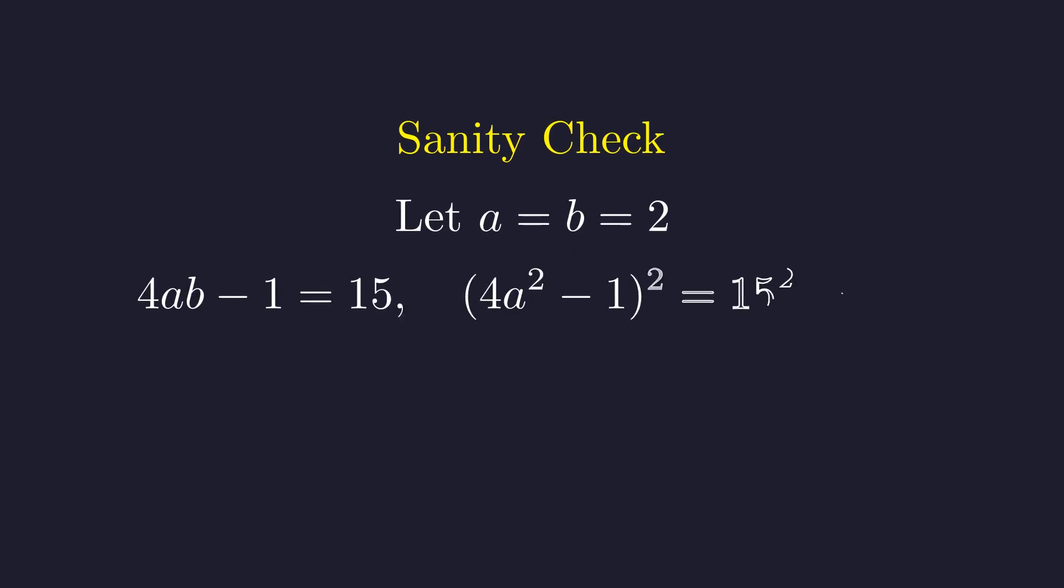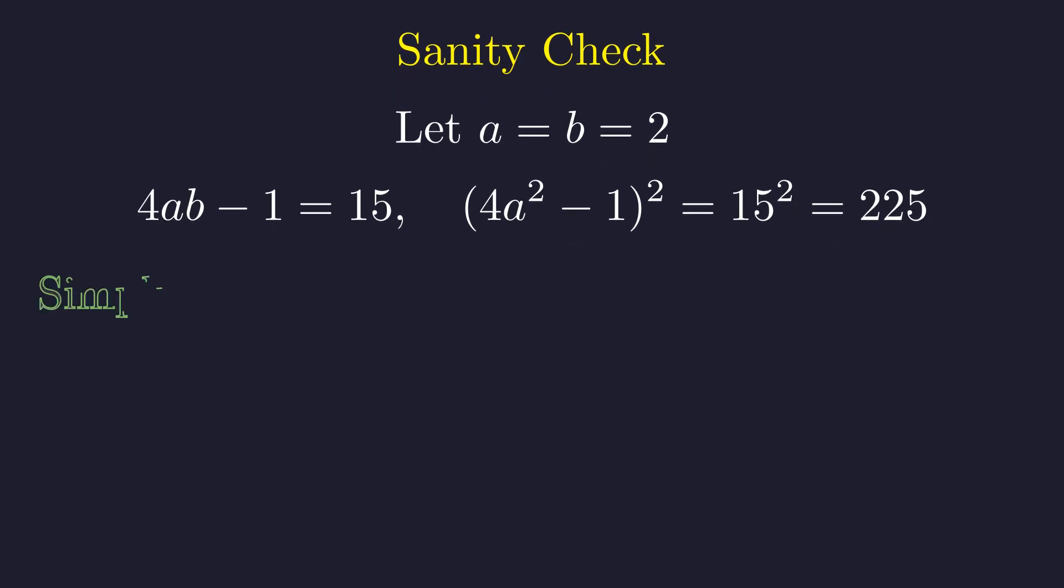Before proceeding with the formal proof, it is instructive to verify our transformation with a concrete example. Let us consider the case where A equals B equals 2. Our original condition becomes: does 4 times 2 times 2 minus 1 divide the square of 4 times 4 minus 1? The expressions evaluate to 15 and 225. Since 225 equals 15 squared, the divisibility holds. Our simplified condition asserts that 15 must divide the square of 2 minus 2, which is 0. As any non-zero integer divides 0, this is also true. The transformation is consistent.